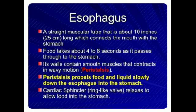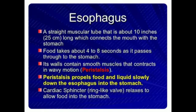The esophagus is a straight muscular tube about 10 inches long that connects the mouth with the stomach. Food takes about 4 to 8 seconds to pass through to the stomach. It contains smooth muscles that contract in a wavy motion — peristalsis propels food and liquids slowly down the esophagus into the stomach.